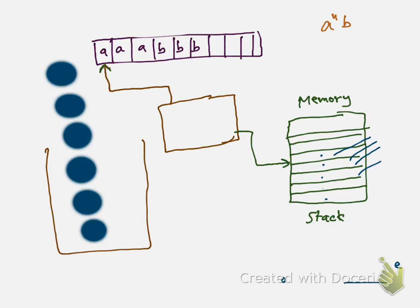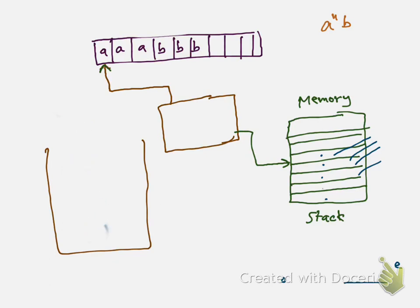As soon as a 'b' comes, we start popping balls out. For every 'a' we put a ball in; for every 'b' we withdraw one ball out. So when we see the first 'b' we remove one ball, second 'b' another ball, and so on. At the end, if we reach the bottom of the stack exactly when we finish reading the input, the number of a's and b's were equal.